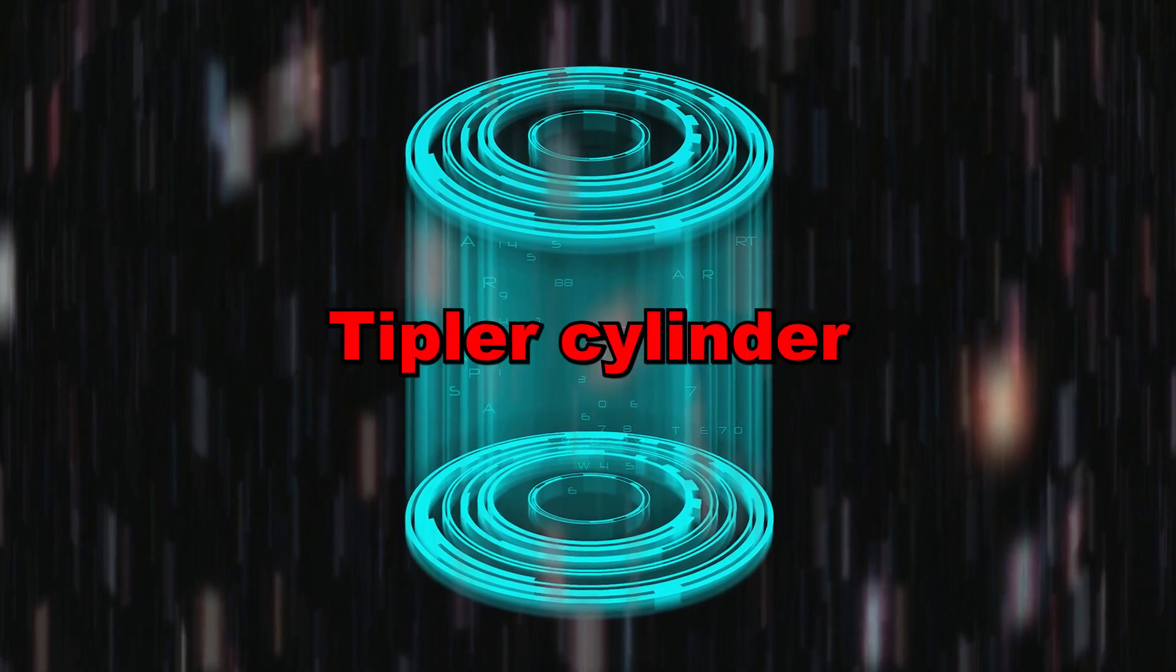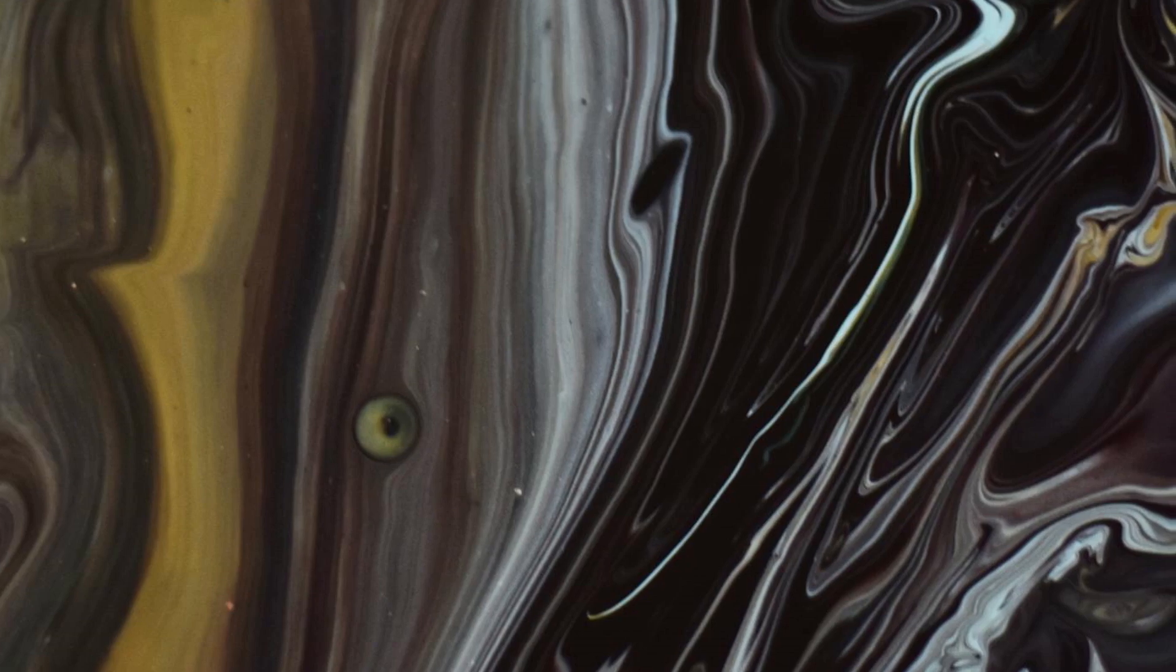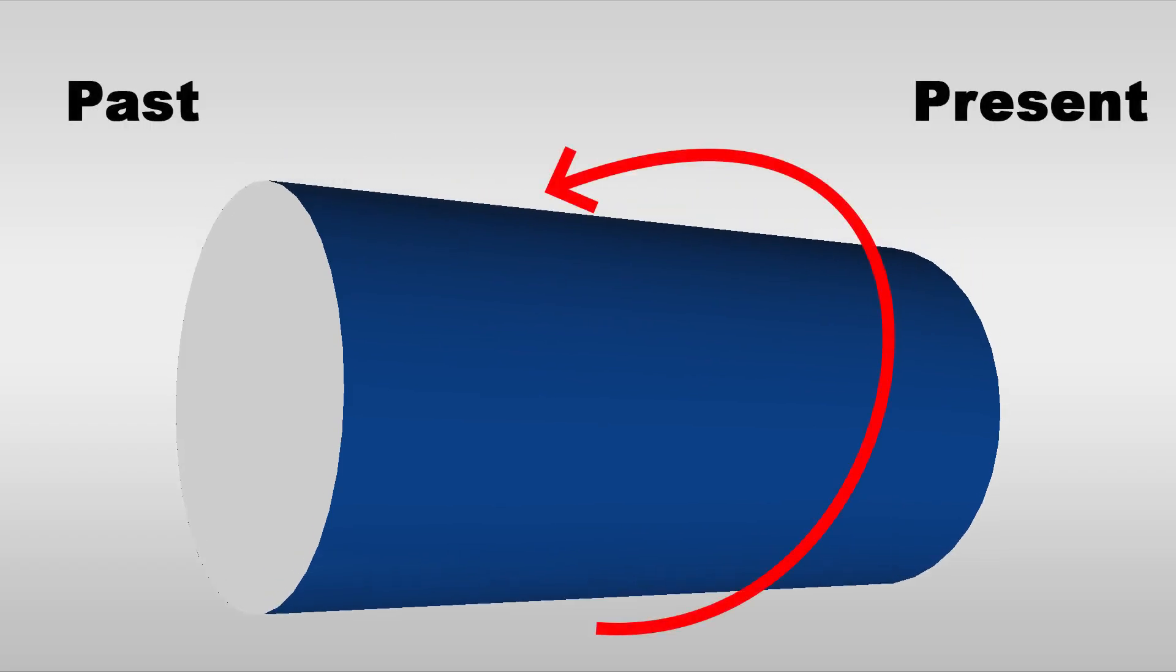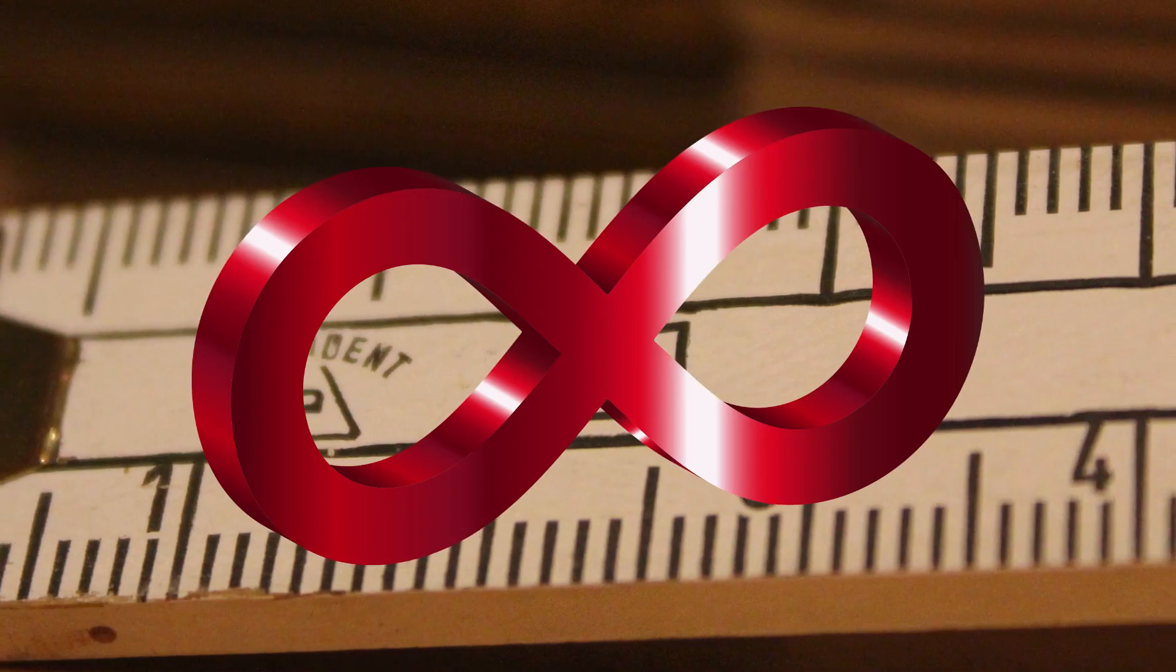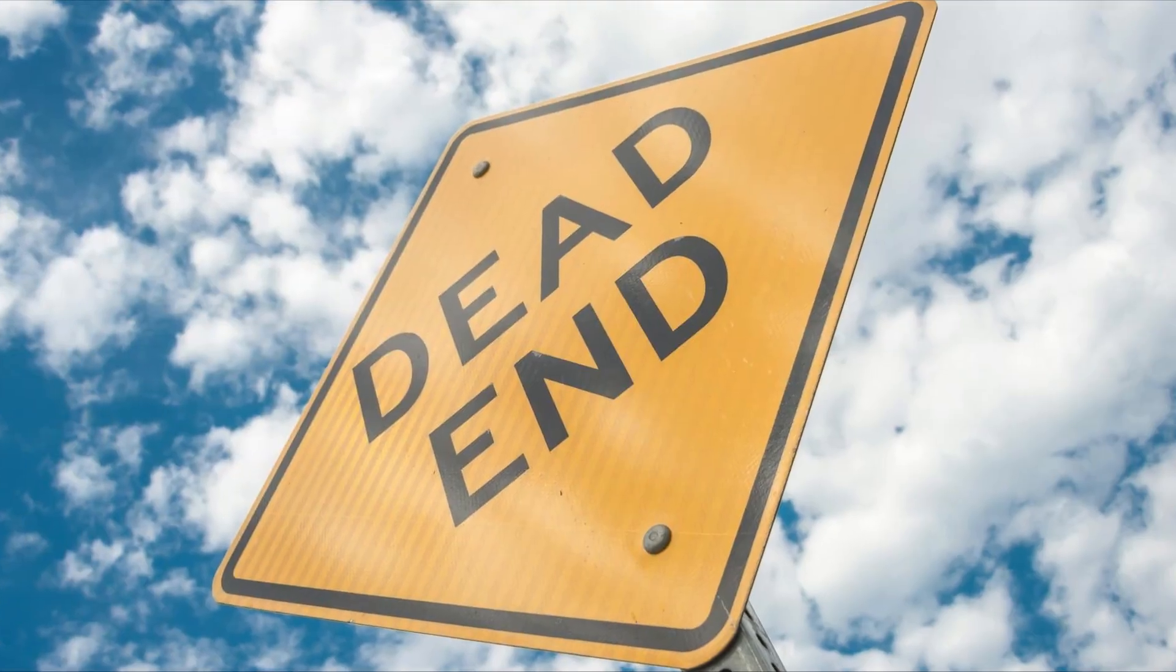Second, we have the Tipler Cylinder. A rotating cylinder made of ultra-dense matter spinning near light speed. It twists space-time into a loop, letting you travel to the past by circling it. But it needs to be infinitely long and made of materials beyond our science. So that's another dead end.